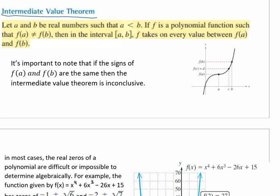It's important to note that if the signs of f(A) and f(B) are the same, then the Intermediate Value Theorem is inconclusive. What we're really looking for here is a sign change to occur. Are we going from something positive to something negative, or from something negative to something positive?